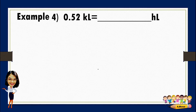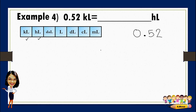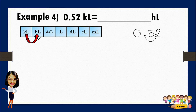For number four, convert 0.52 kiloliters to hectoliters. We write the given: 0.52. This is not a whole number. From kiloliters to hectoliters there is only one movement to the right. We move the decimal point once to the right. The decimal point lands between five and two, so we do not need to add a zero. The answer is 5.2.